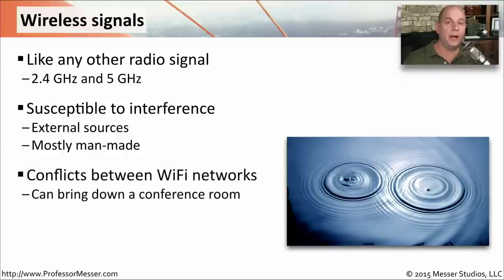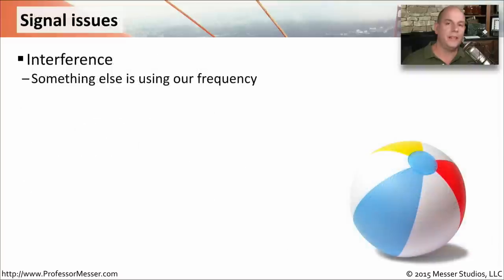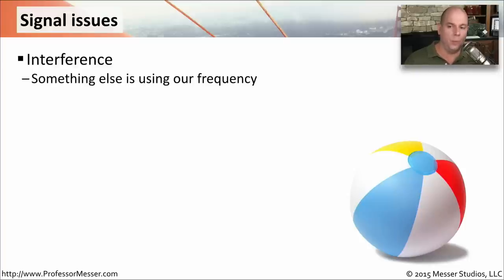There can also be conflicts between other wireless access points using similar frequencies to ours, causing difficulty communicating wireless signals. When we look at the things that can cause signal issues, interference is probably at the top of everyone's list — something else using our frequency. It might be another access point, a cordless phone, or a microwave oven conflicting with the frequencies we're using for our wireless network.